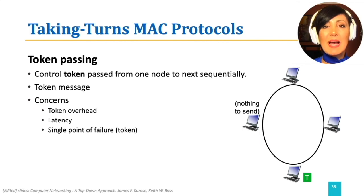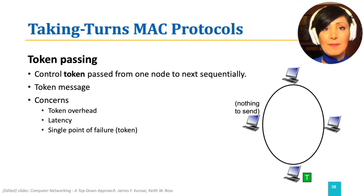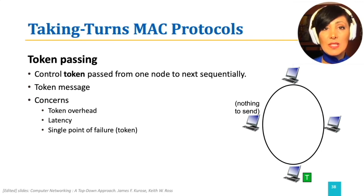Token passing is decentralized and highly efficient. However, this also introduces overhead to the system, which is the overhead of the token itself. It adds to the latency of the system by waiting for the token. It also has a single point of failure, which is the token, which might stop rotating among nodes when a node crashes or a node neglects to pass the token on.